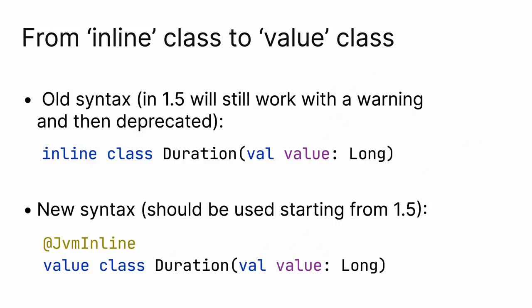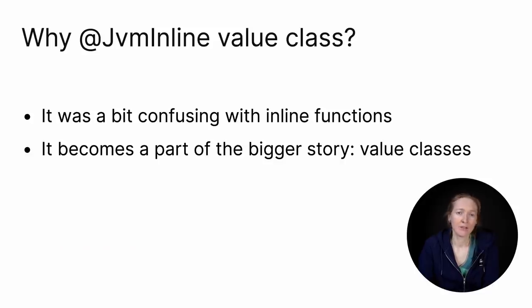If you follow the language changes and were using inline classes before, you might be surprised. Why does the syntax change? It was inline class before, but now it's value class annotated with the JVM inline annotation. Why? The term inline class turned out to be a bit confusing with inline functions. Some might expect that all members of the inline class are inlined, which is not the case. Or one could think that an inline class, like inline function, will always be replaced with underlying value, which is also not correct.